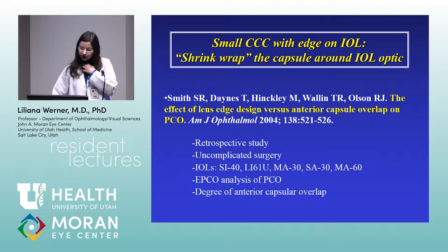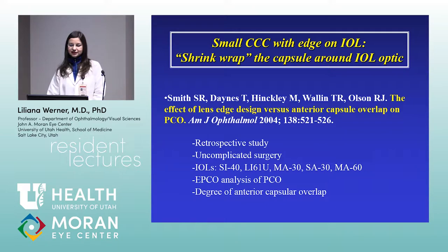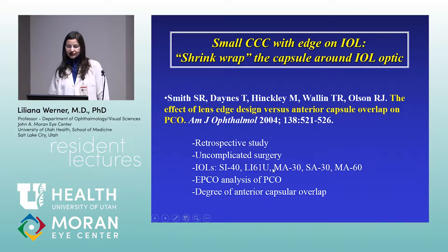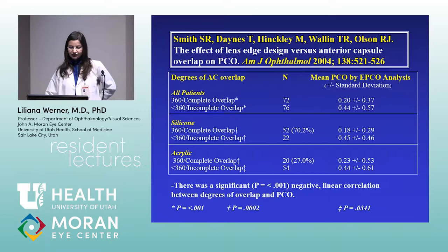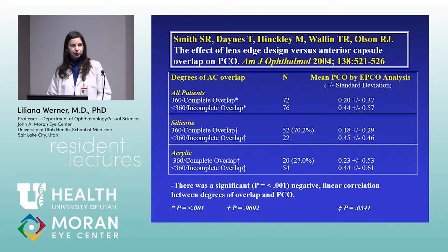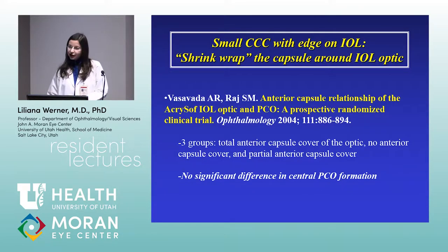The third factor is the capsulorhexis size. The majority of studies indicate the capsulorhexis should ideally be smaller than the IOL optic, so the edge covers the periphery of the IOL optic for 360 degrees. Studies comparing eyes with complete 360-degree overlap versus incomplete overlap found that complete overlap consistently provides better prevention of posterior capsule opacification across all IOL types tested.